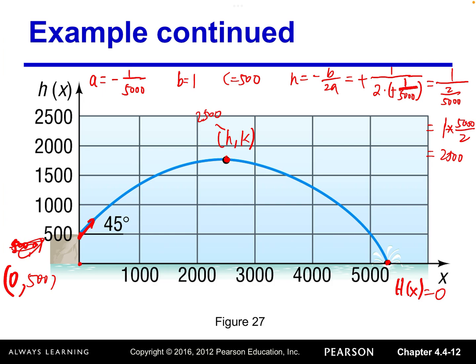To find k, we evaluate the function at x equals 2500: k equals h(2500). Plugging into the quadratic function: k equals negative one over five thousand times 2500 squared, plus 2500, plus 500.